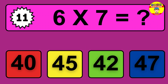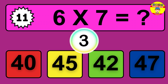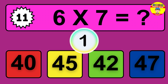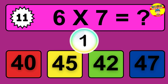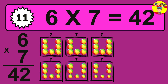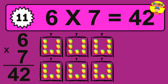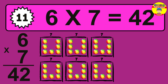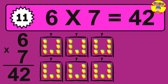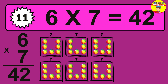Question 11. 6 times 7 equals what? The answer is 6 times 7 is 42. To calculate, we have 6 groups with 7 balls each one. So how many balls do we have? 42 balls.